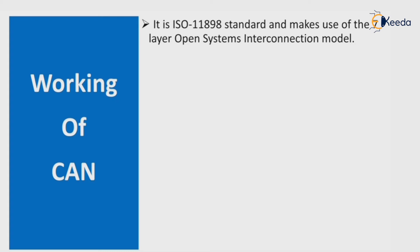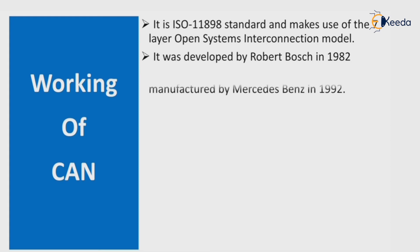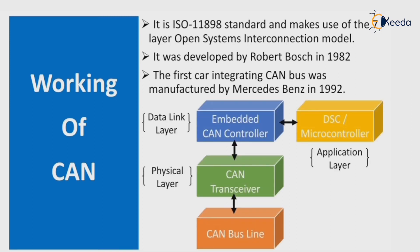CAN is the ISO 11898 standard and makes use of the seven-layer Open System Interconnect model. It was developed by Robert Bosch in 1982. The first car integrating CAN bus was manufactured by Mercedes-Benz in 1992. This is the CAN architecture.